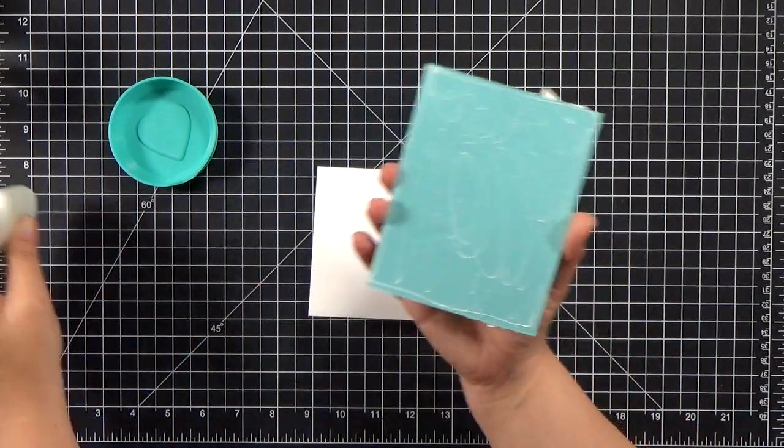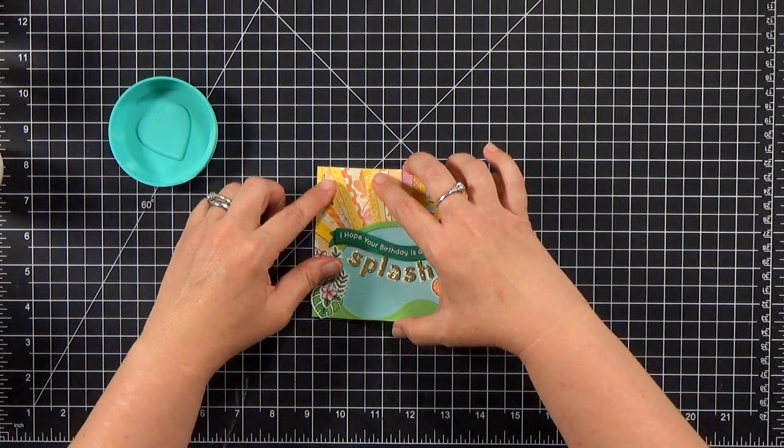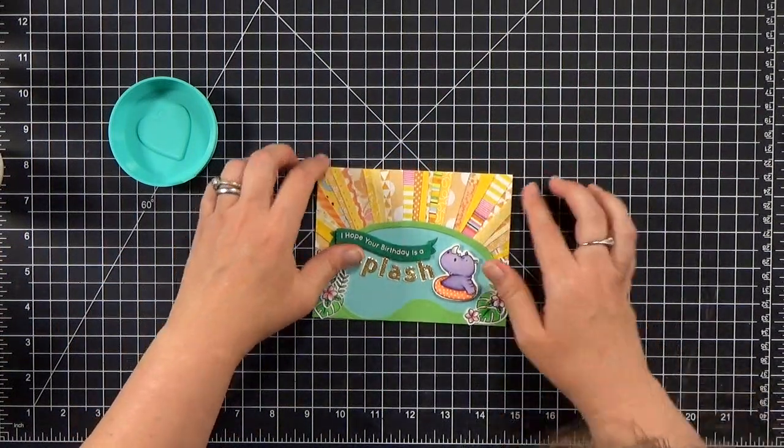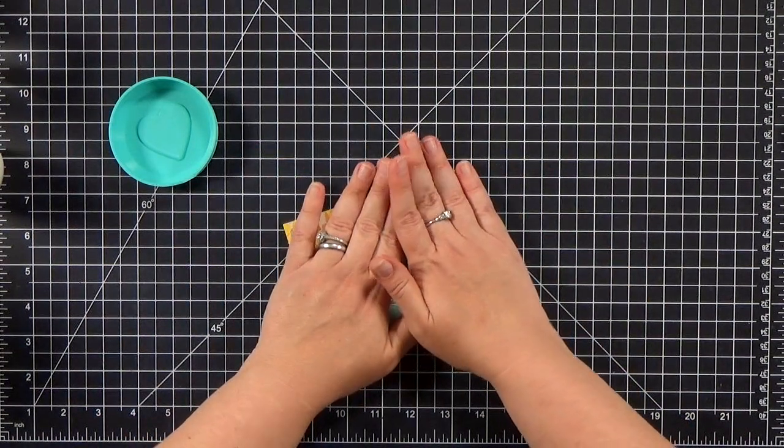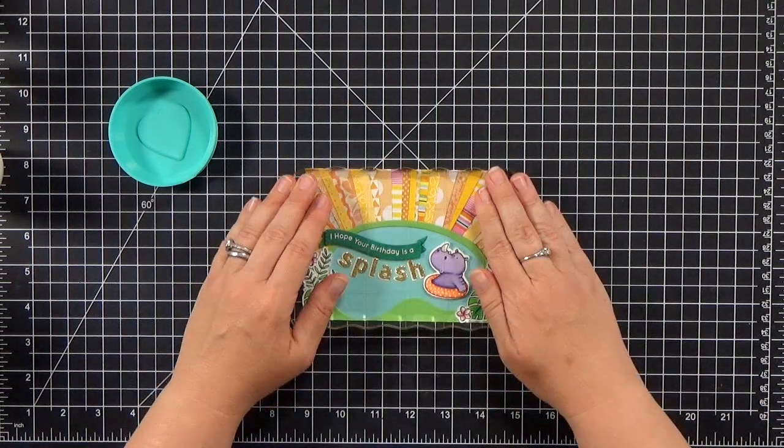I think that's super cute. And then all I need to do is glue the card front to the card base. And again, I like the wet glue for that. It gives me some wiggle room in case I need to line it up just right.